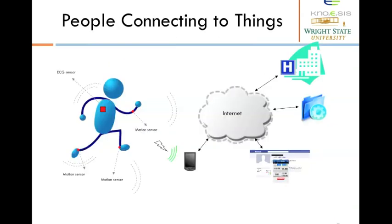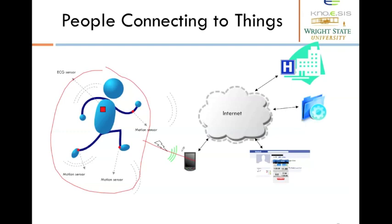The connectivity is not just between sensors and devices — people are connected to things. For example, an athlete may be interested in monitoring his performance. He may use an ECG sensor to monitor his heart rate, and a motion sensor to count the number of steps taken. All these devices on the athlete are connected to a smartphone and the data may be delivered to the cloud.